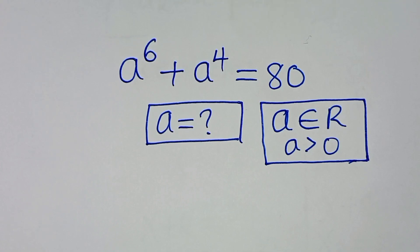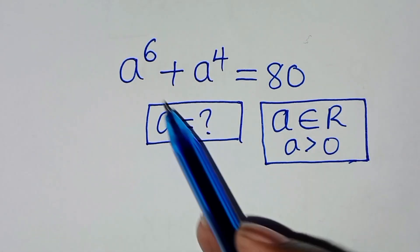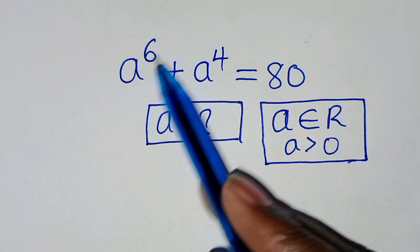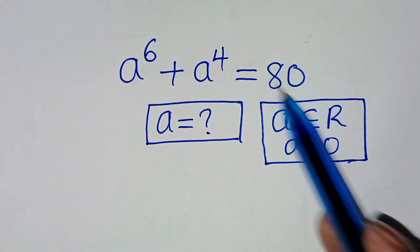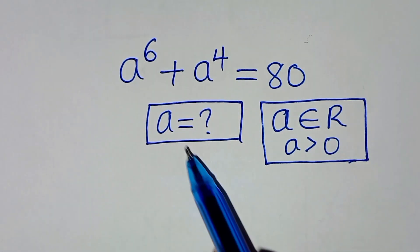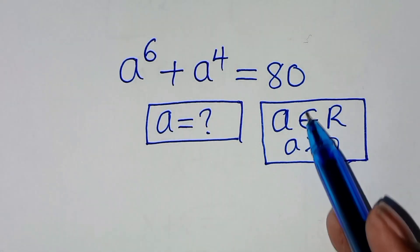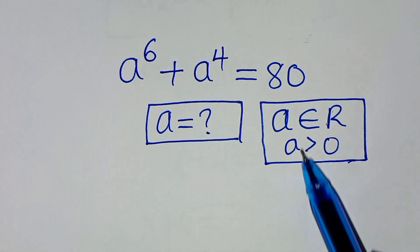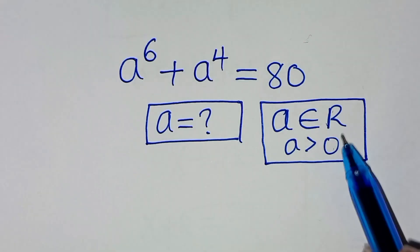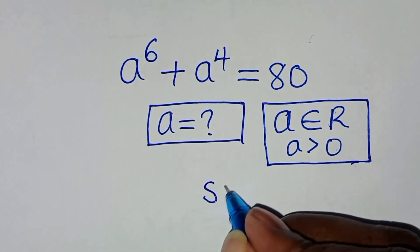Hello everyone, welcome. Let's solve this nice algebra problem: a to the power of 6 plus a to the power of 4 equals 80. What is the value of a, given that a is a member of real numbers and a is greater than 0? Let's present the solution from here.